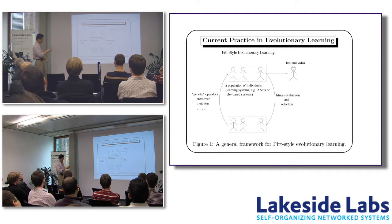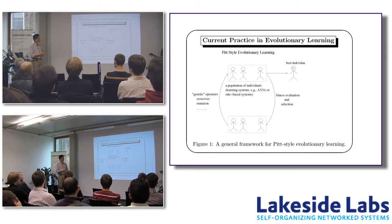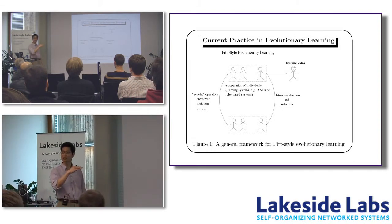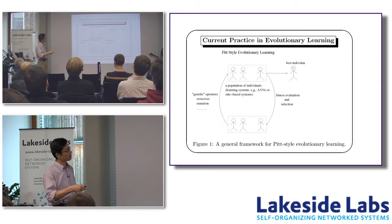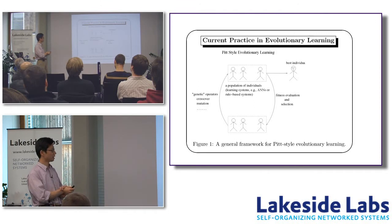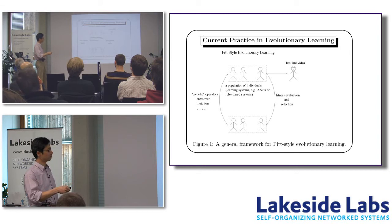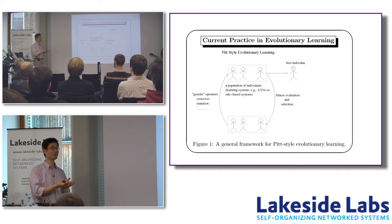Coming back to this particular talk — I'm step-by-step drilling down into the evolutionary algorithm. This slide summarizes current practice at a very high level of abstraction. Whenever you talk about evolutionary learning, this conceptual diagram captures the high-level structure. We always have a population of learning systems. In my case, every single individual is represented by one artificial neural network. Once we have this set of neural networks, we want to evaluate how good they are — we have some notion of fitness.